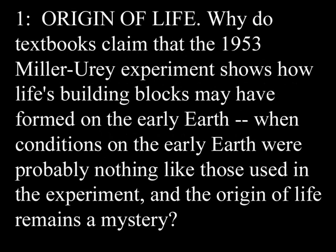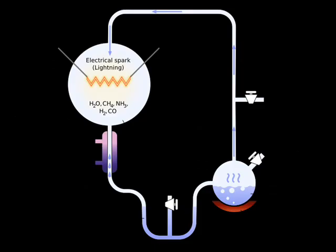Question 1: Origin of Life. Why do textbooks claim that the 1953 Miller-Urey experiment shows how life's building blocks may have formed on the early Earth, when conditions on the early Earth were probably nothing like those used in the experiment, and the origin of life remains a mystery? First of all, the Miller-Urey experiment is not really related to evolution — it's closely related to organic chemistry and abiogenesis. Second of all, this experiment was performed 55 years ago. Don't you think that in all that time, people have had a chance to repeat it under different conditions?